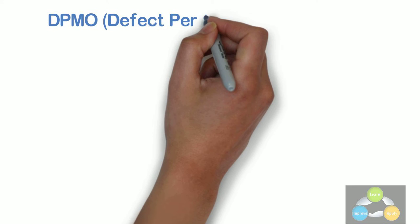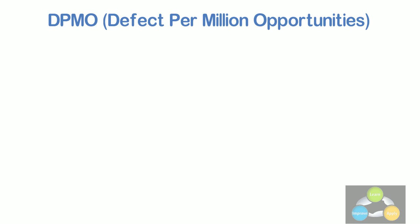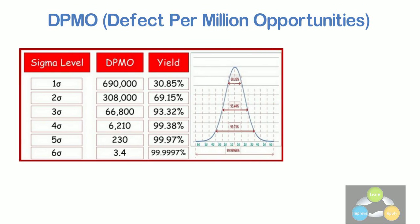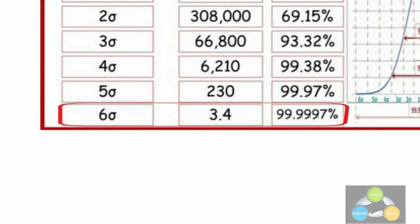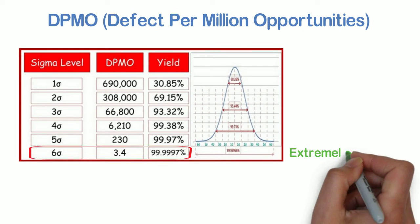DPMO, that is defects per million opportunity, is another concept in Six Sigma used for counting defects in statistical processes. The Six Sigma process will have 99.997% of accuracy or 3.4 DPMO, which is extremely accurate.